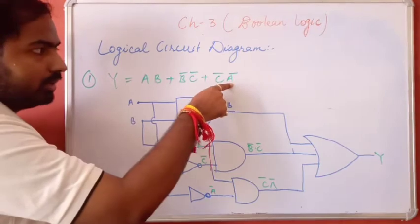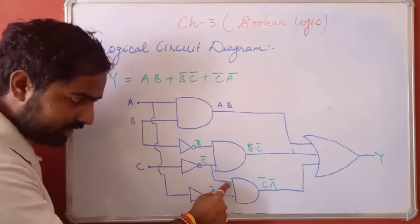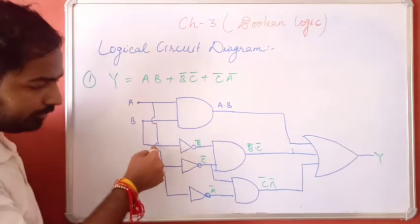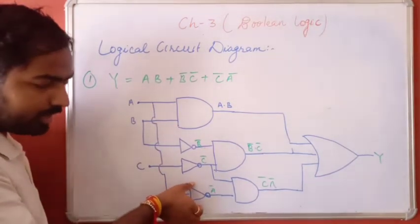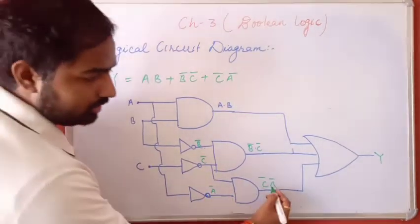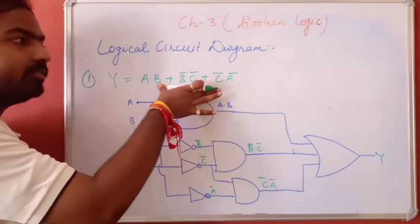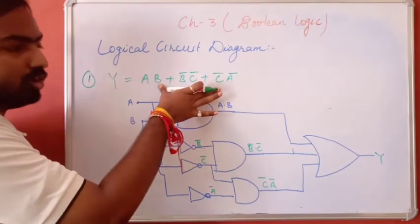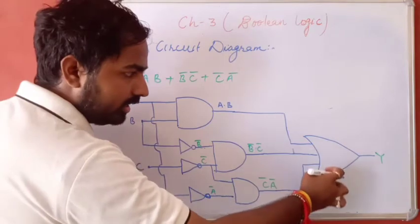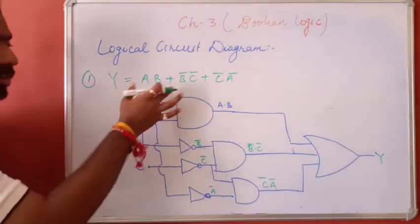Next, C̄Ā: this input is C̄, and this input signal is Ā, which came from A through a NOT gate. Then an AND gate implies Ā and C̄, giving C̄Ā. Then all the inputs have a plus operation — OR operation — so all inputs go into an OR gate. This is the logical circuit diagram of this function.